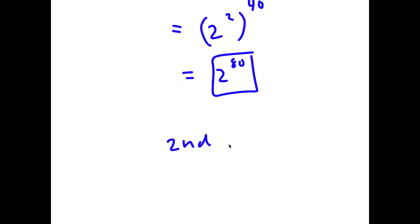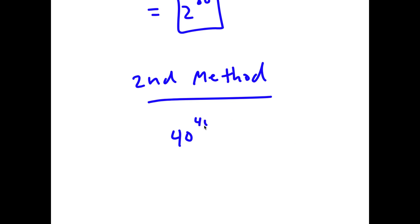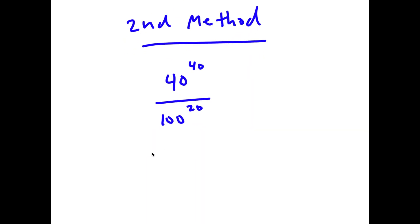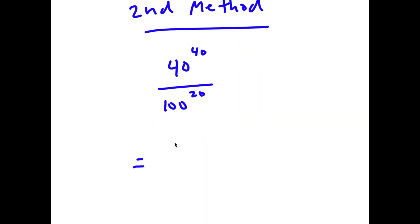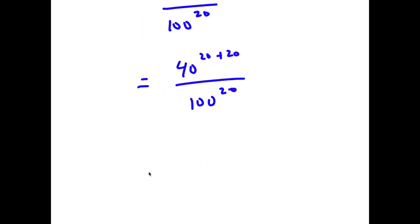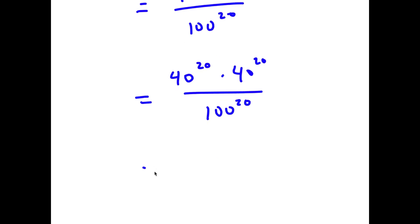Now I actually have a second method of solving this problem. Again, I start with 40 to the power of 40 over 100 to the power of 20. This time I'm going to rewrite 40 to the power of 40 as 40 to the power of 20 plus 20. Now I have this over 100 to the power of 20. And this is the same thing as 40 to the power of 20 times 40 to the power of 20 times 40 to the power of 20 over 100 to the power of 20.